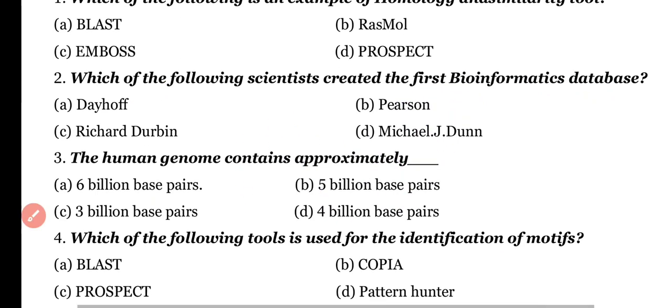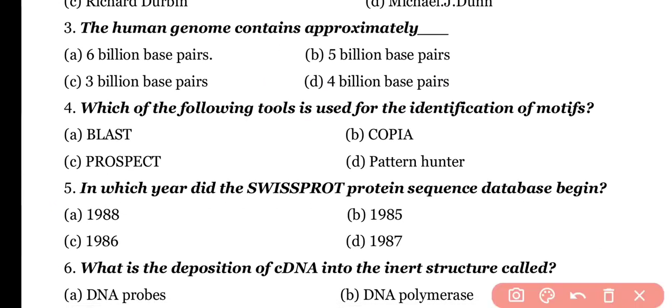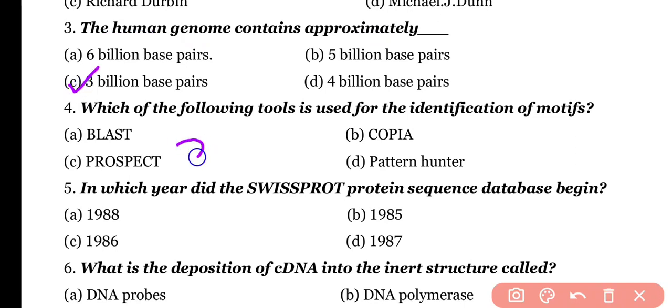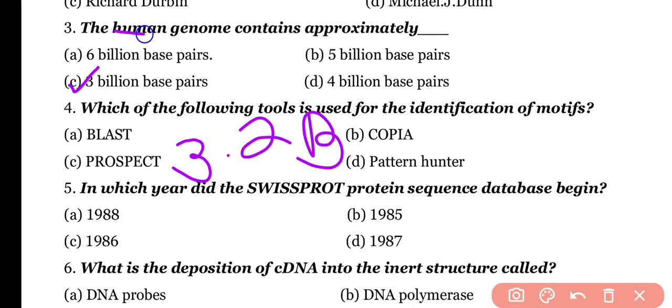Question number 3. Human genome contains approximately: 6 billion base pairs, 5 billion base pairs, 3 billion base pairs, or 4 billion base pairs? Correct answer is option C. Almost 3.2 billion base pairs are present in the human genome.